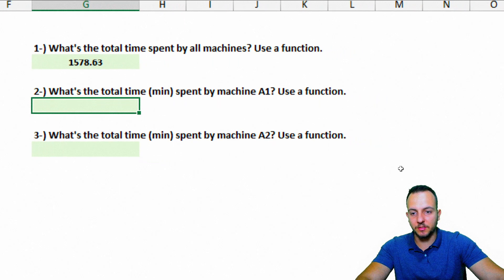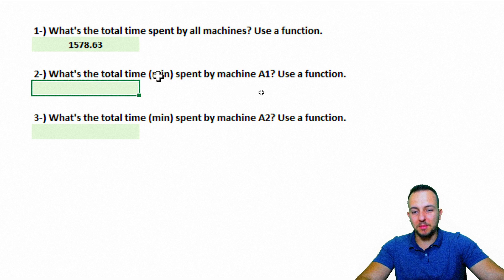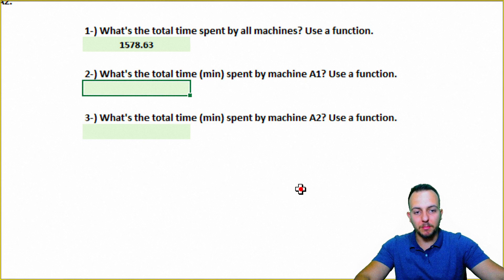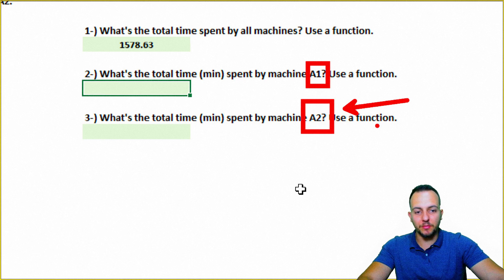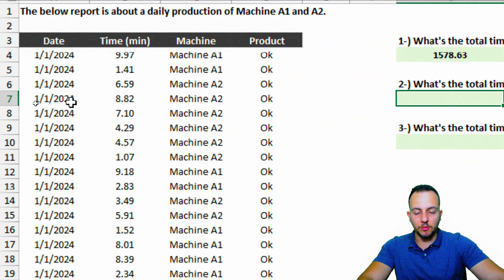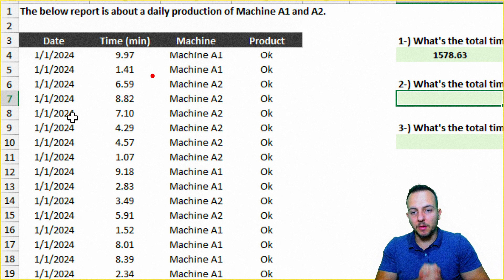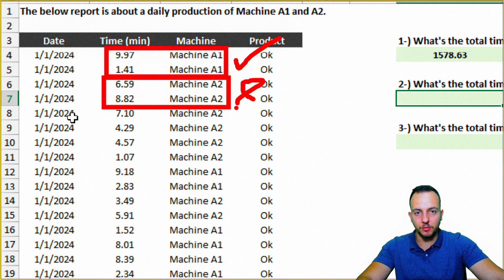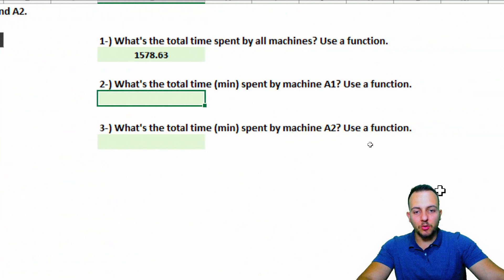The second question: what is the total time in minutes spent by machine A1? Use a function. Instead of adding up all values, we need to add up only the values that match machine A1. If a value corresponds to machine A2, we can't include it. To sum with a condition, we use the SUMIF function.